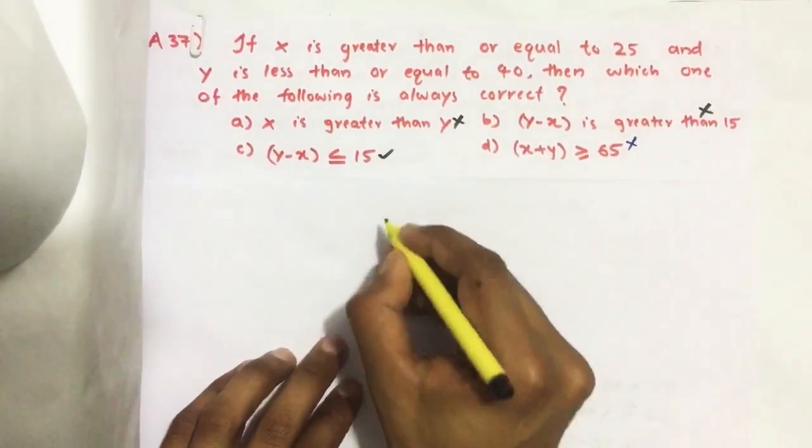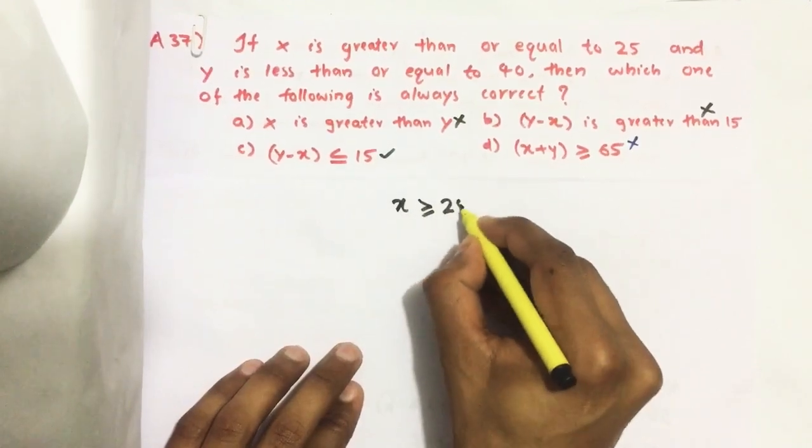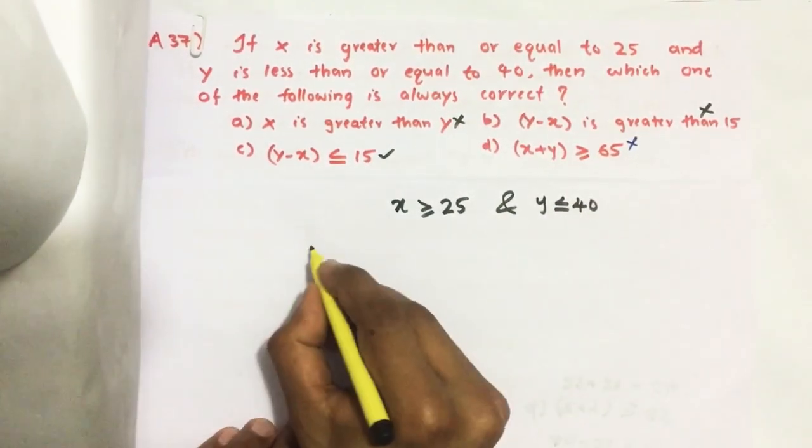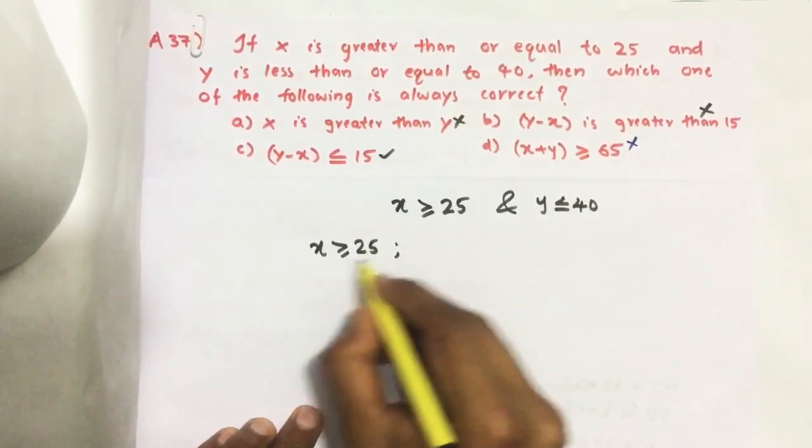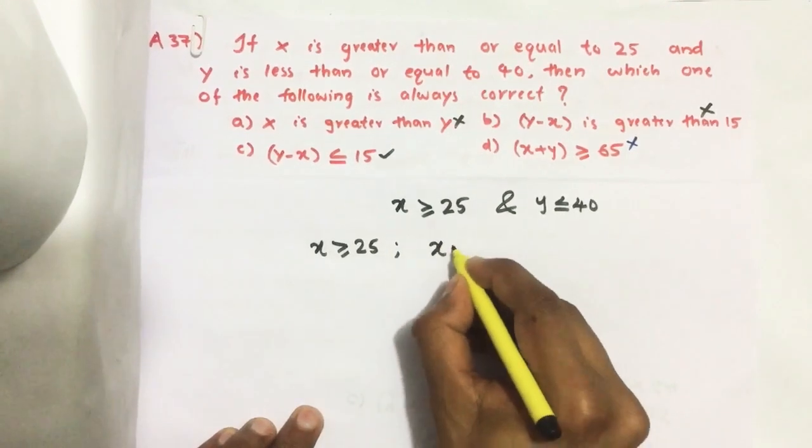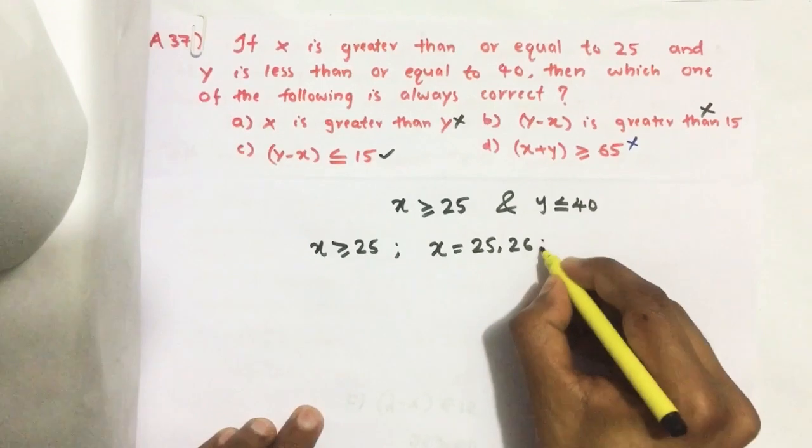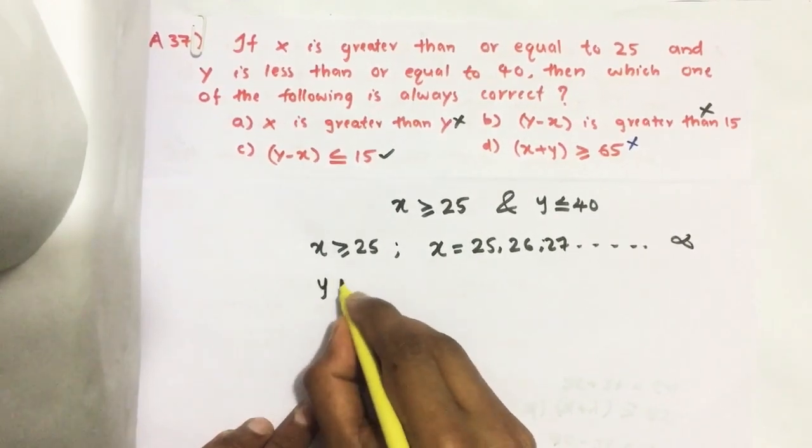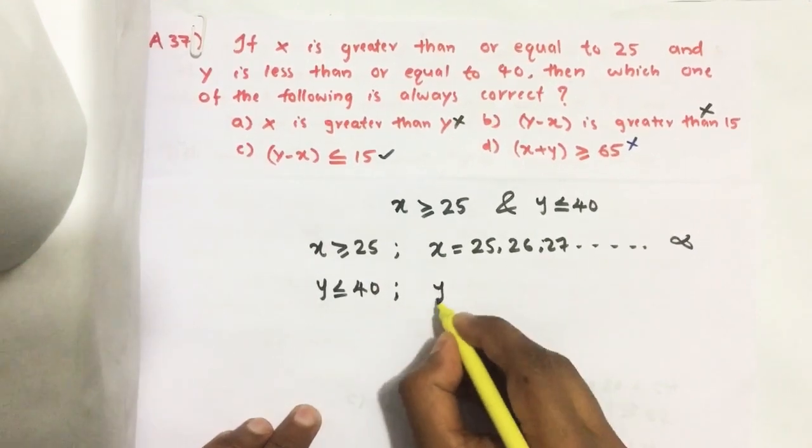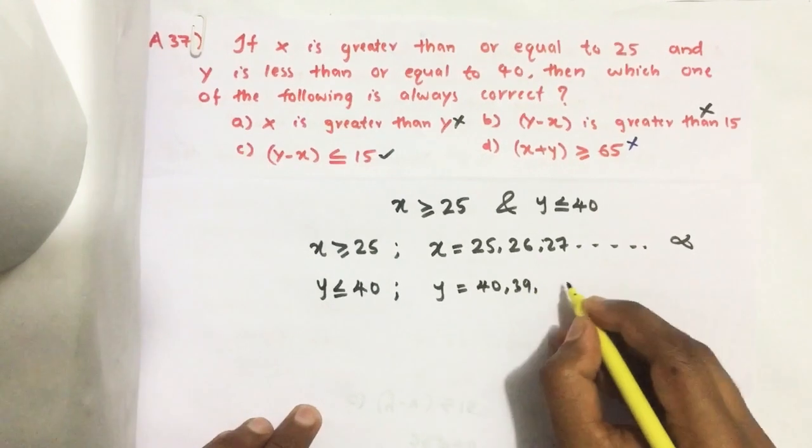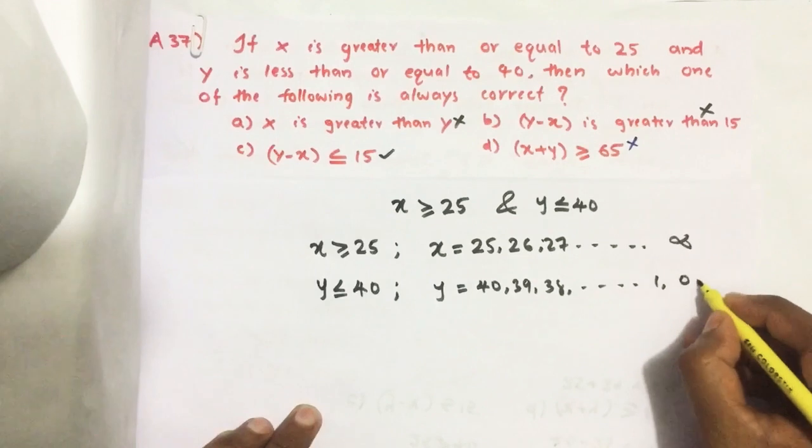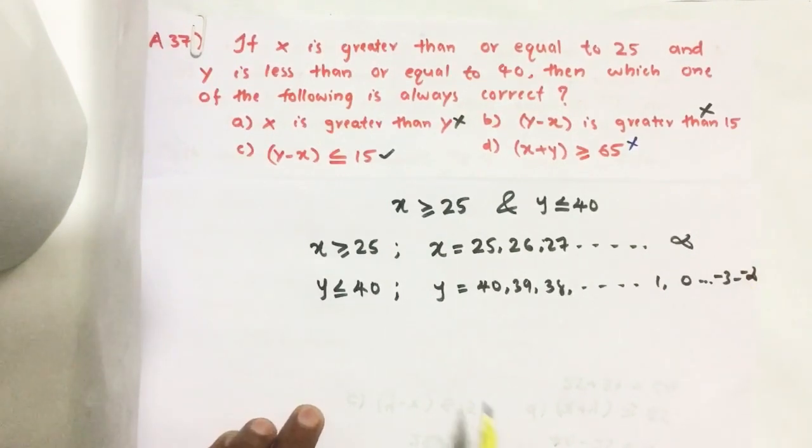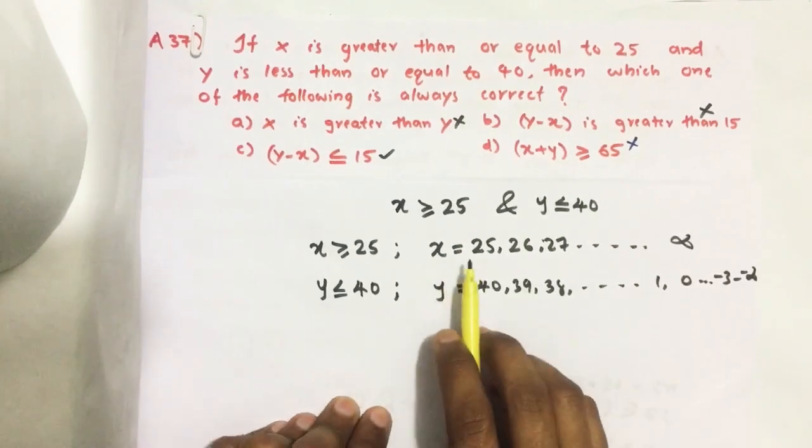Here it is given that X is greater than or equal to 25 and Y is less than or equal to 40. X greater than or equal to 25 means X can take values 25, 26, 27, and so on up to infinity. Y less than or equal to 40 means Y can take 40, 39, 38, and so on like 1, 0, minus 3, going up to minus infinity.